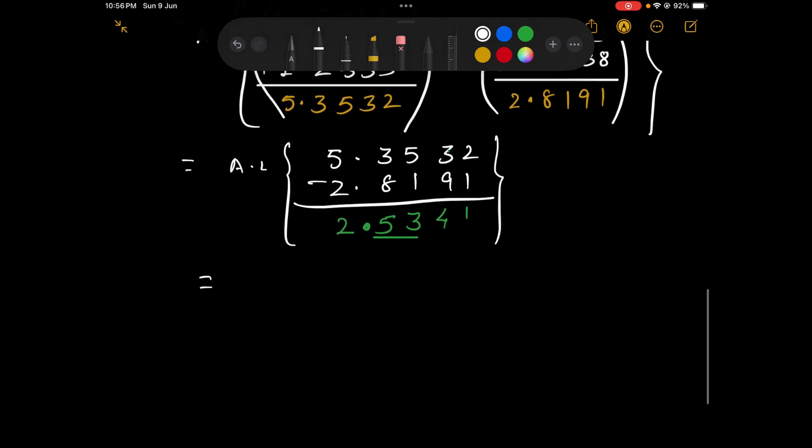Now the antilog of this number that is 0.5341, mean difference 1 is 3421. Now directly put a decimal after 1 digit times 10 to the power. This number over here is power that is 10 raised to 2. So we get it as 342.1 and the units are gram per mole since we have found out the molar mass of the unknown solute.